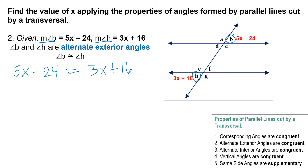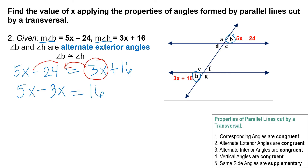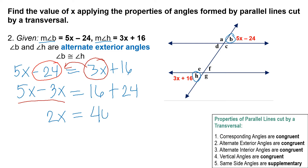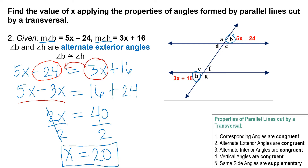Combining like terms: transpose 3x to the other side to get 5x minus 3x, and transpose negative 24 to become positive 24. So 2x equals 16 plus 24, which gives 2x equals 40. Dividing both sides by 2, x equals 20.